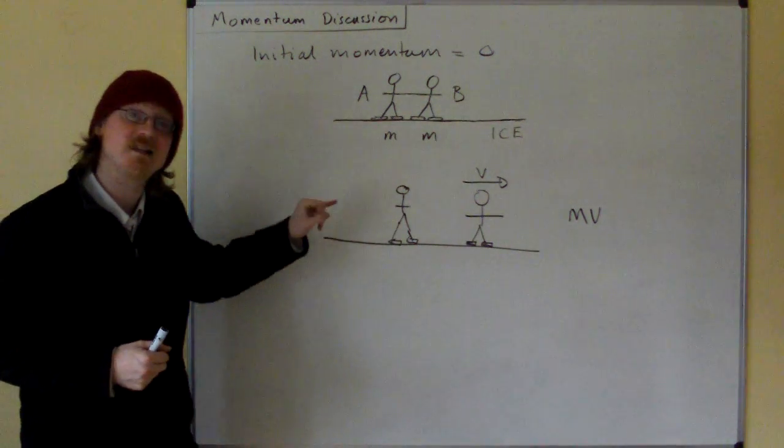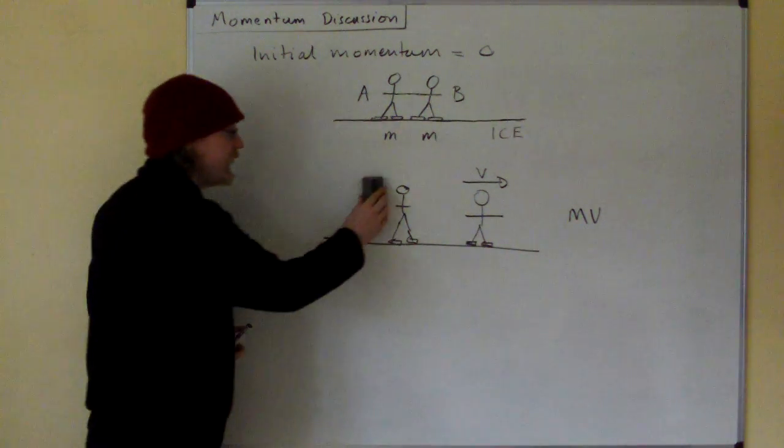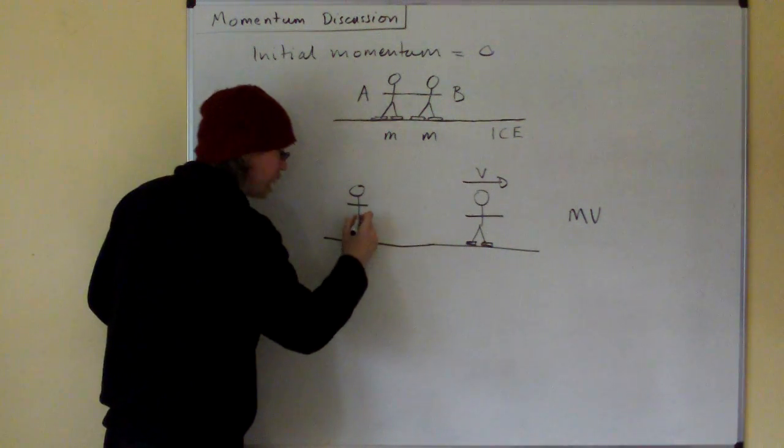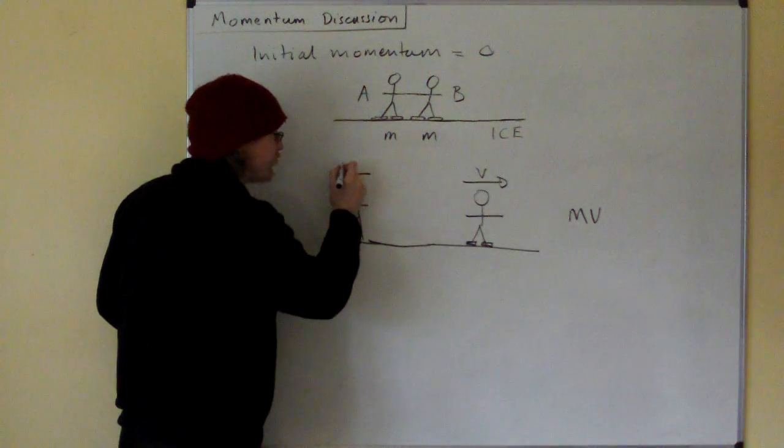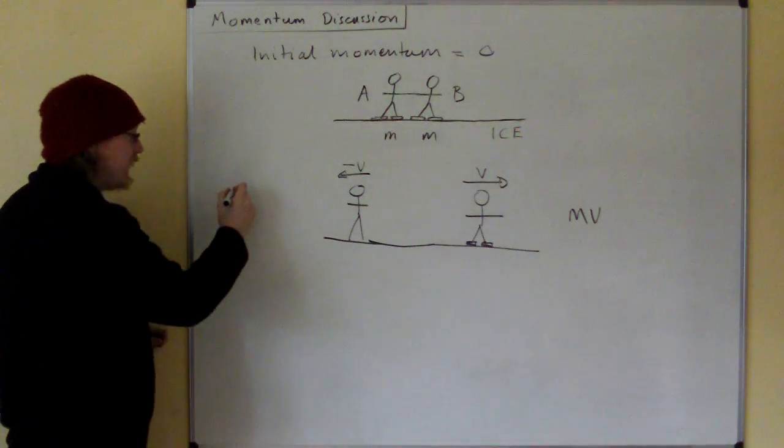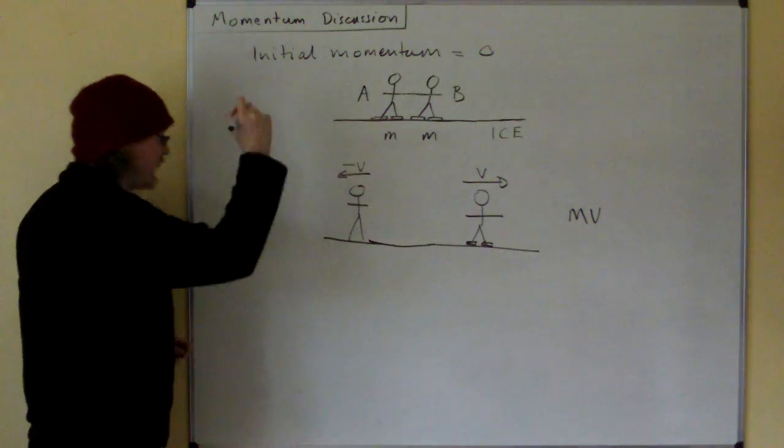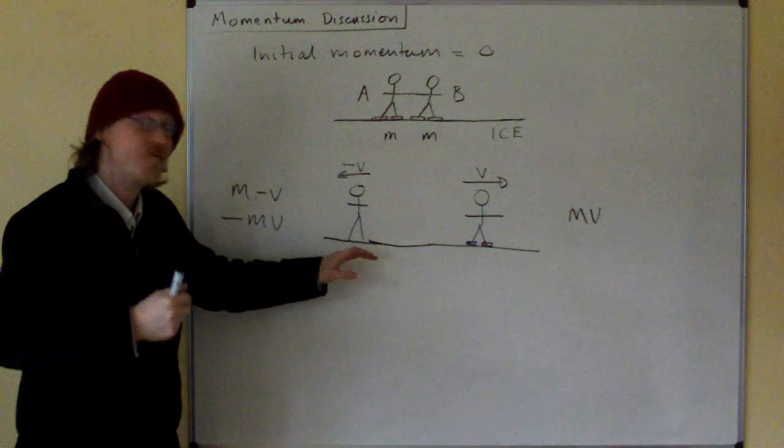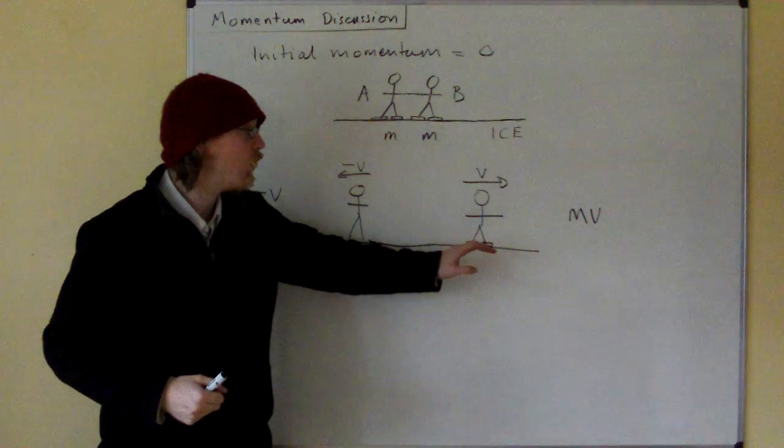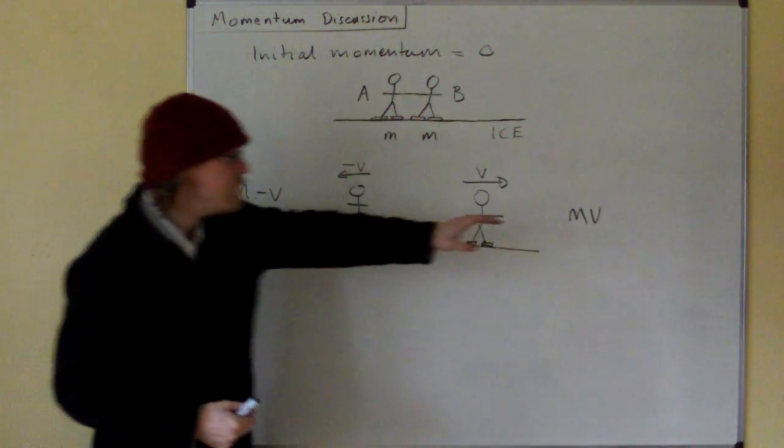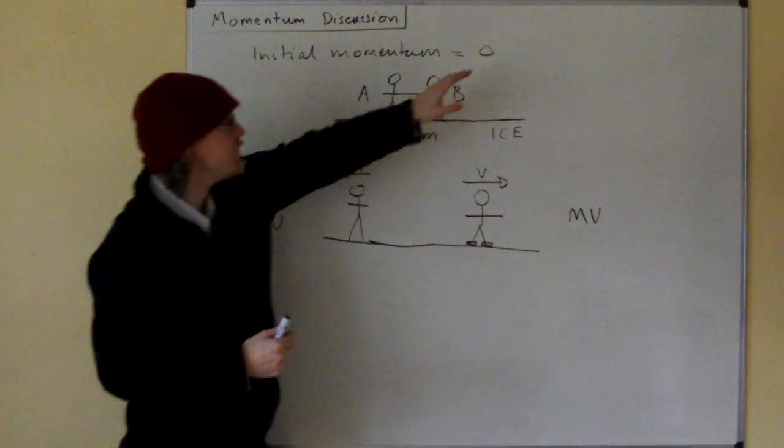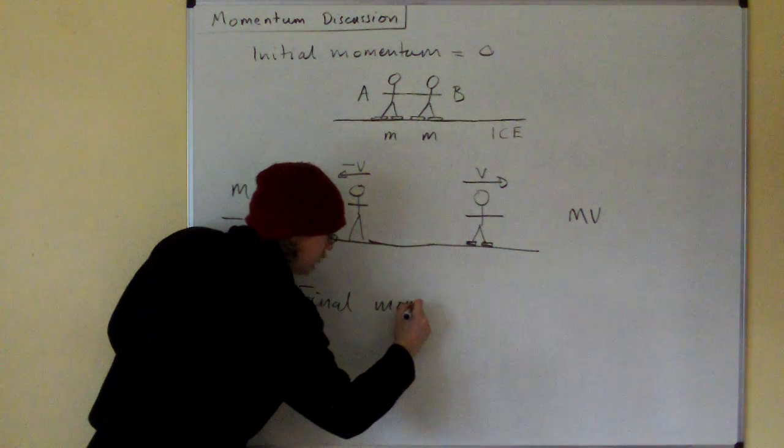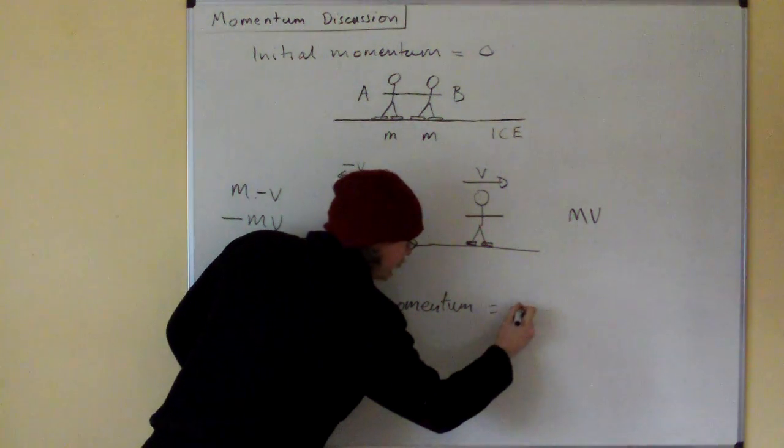What actually happens is rather than remaining stationary, twin A also gets a velocity in the opposite direction, minus v. So what we have here is m times minus v, which is minus mv. So if we add the two together, the final momentum of twin A and the momentum of twin B, we have mv minus mv, which is zero. So final momentum equals zero.